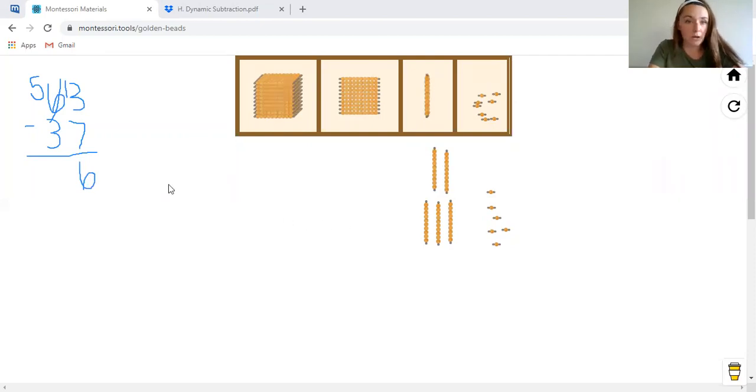And then we'll move into our 10 spot. And we can take three from five. So let's go ahead and do that one. Take them away, all the way away. We'll put them up. And that leaves us with two. So 63 minus 37 gives us 26.